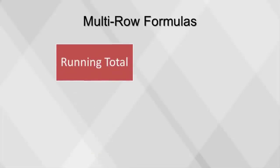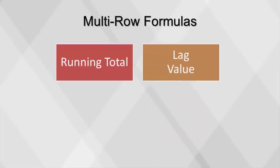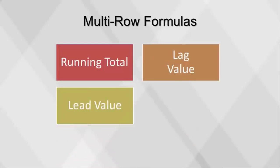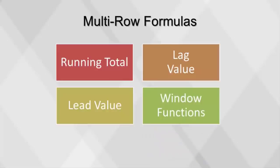Sometimes data from a separate row or rows needs to be used when creating variables, and for this a multi-row formula is needed. A running total is the most basic multi-row formula — it adds the value of a field of a current row to the value of a previous row. A lag value looks at the data in preceding rows, while lead values look at data in subsequent rows. Window functions provide the ability to perform calculations like sum, average, and rank across sets of rows that are related to the current query row, equivalent to aggregating the data set across one or more dimensions and then joining the resulting data set back to the original.